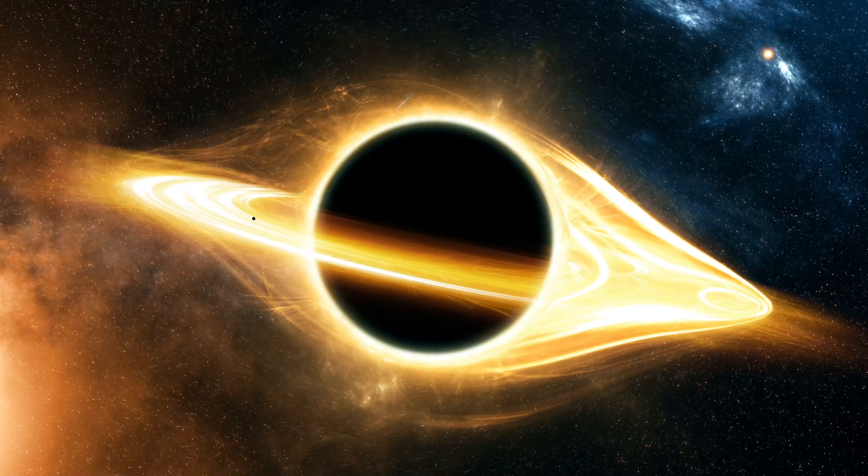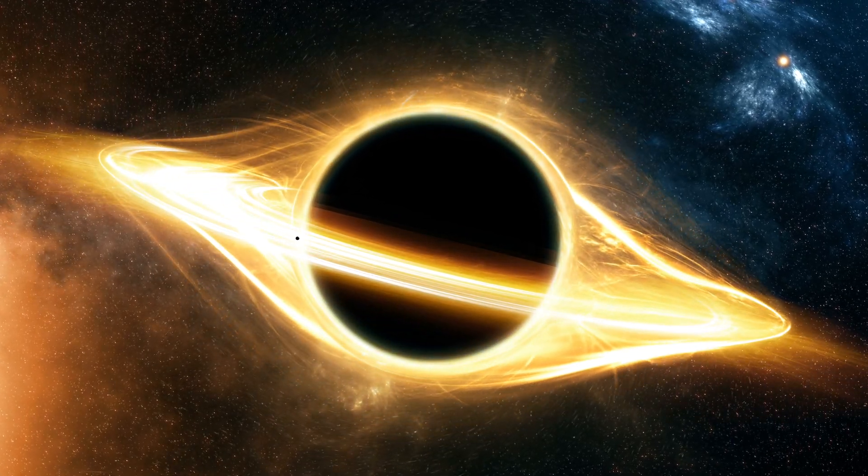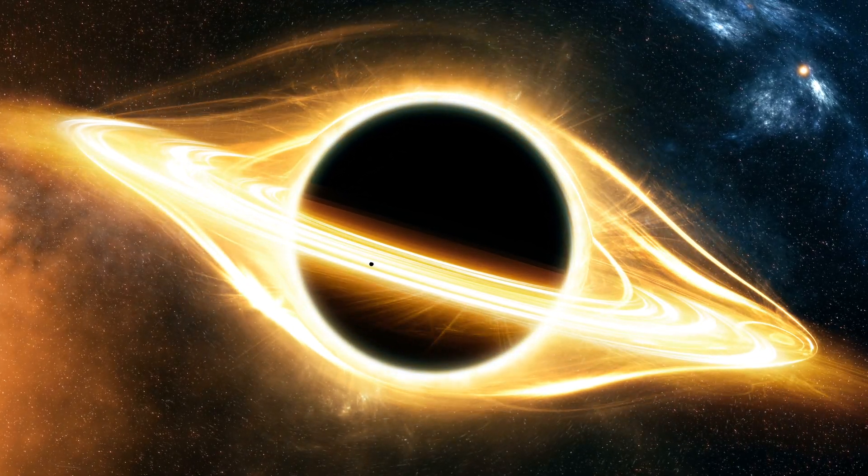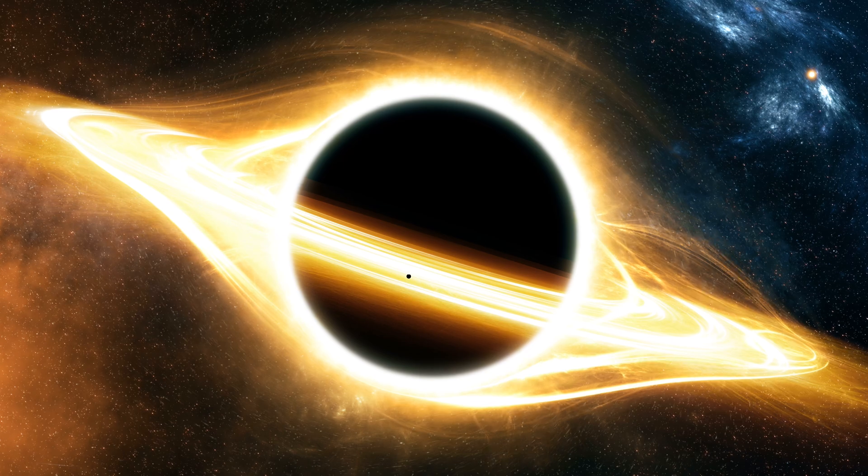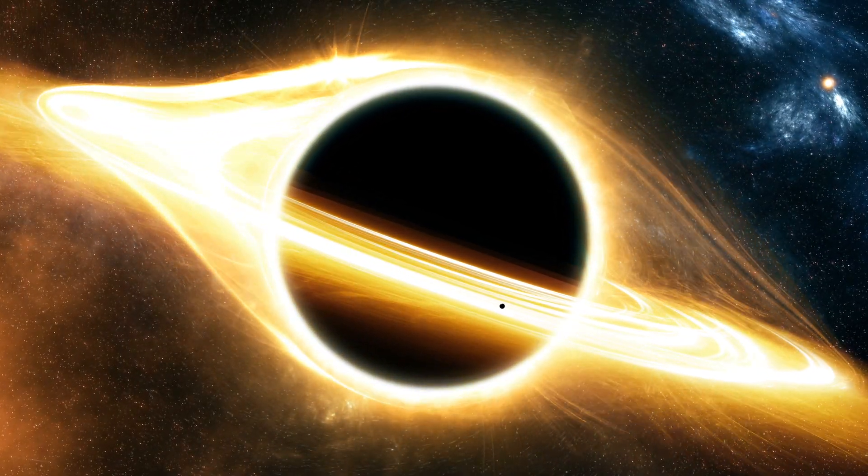Picture a spinning black hole, a celestial powerhouse capable of generating an immensely powerful gravitational field. This force is so formidable that it bends the curvature of space-time back onto itself, forming what scientists call a closed time-like curve, or CTC. Think of it as nature's way of creating a cosmic shortcut, a bridge through the fabric of space and time.